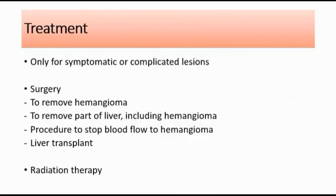For treatment, it is only indicated for symptomatic or complicated lesions. In most cases, the hemangioma never grows and never causes a problem. But if surgery is indicated, we will do surgery to remove the hemangioma. If the hemangioma can be easily separated from the liver, the doctor may recommend surgery to remove the mass, or surgery to remove part of the liver including the hemangioma. In some cases, the surgeon may need to remove a portion of the liver along with the hemangioma.